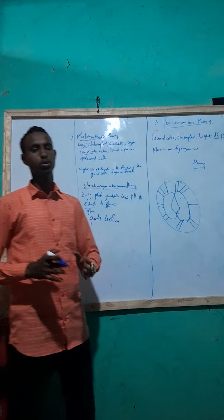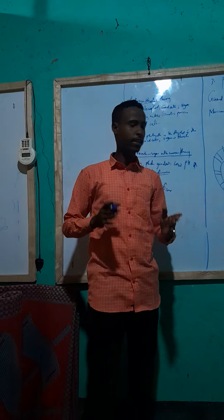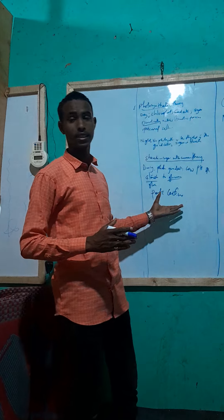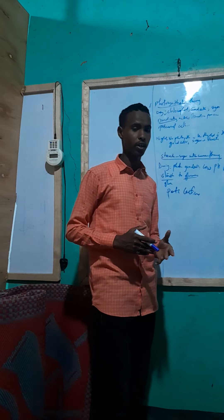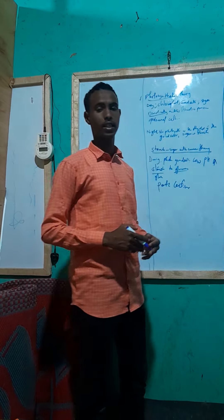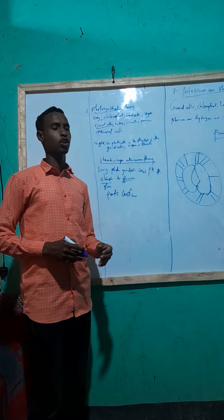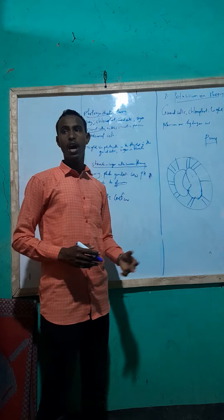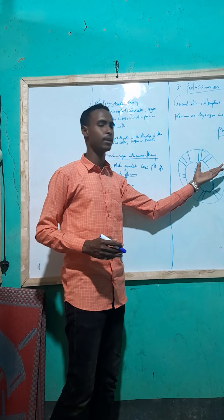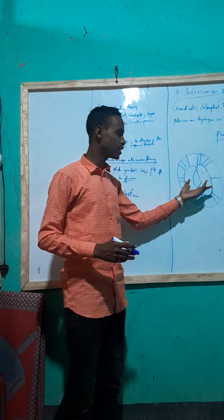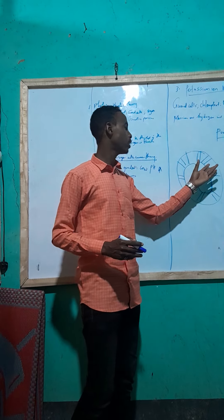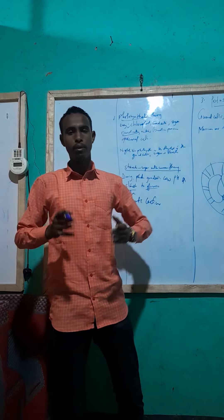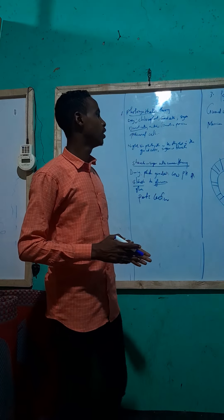At night, carbon dioxide will not be used and will accumulate in the guard cells. The accumulation of carbon dioxide in the guard cells will lower the pH. Once the pH is lowered, the osmotic pressure in the guard cells will decrease. As the osmotic pressure decreases compared to the neighboring adjacent epidermis cells, the guard cells will lose water to those cells, become plasmolyzed, and the stomata will close.